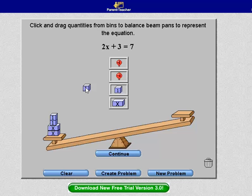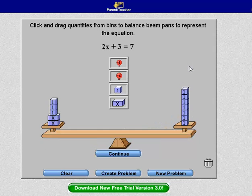I need to have 3 units. 1, 2, 3. On the right-hand side, I need to have 7 units. And once I get the 7th one on there, it is equal. And then I hit Continue.